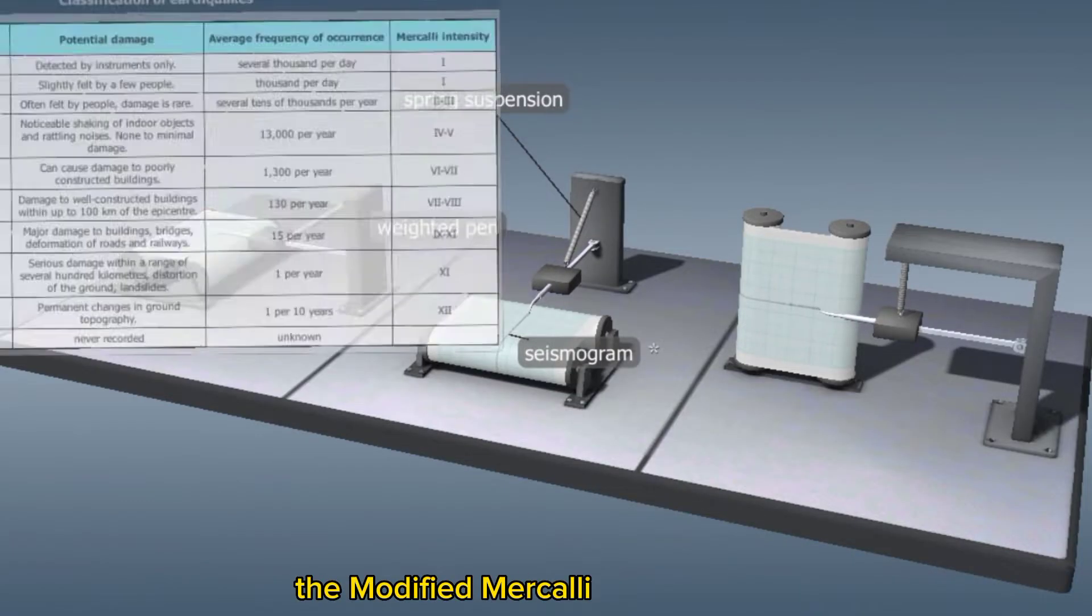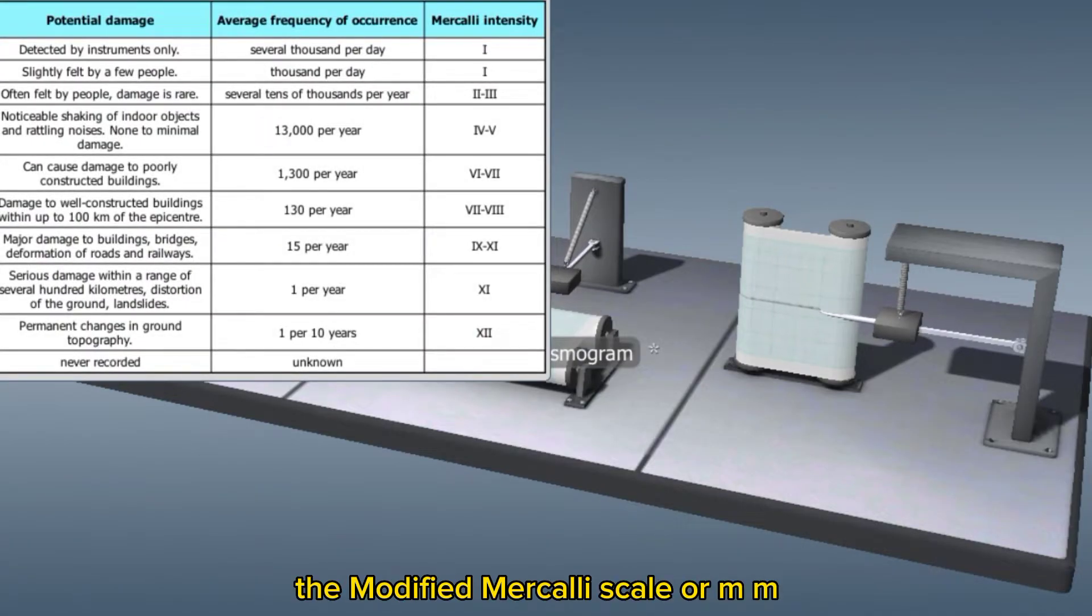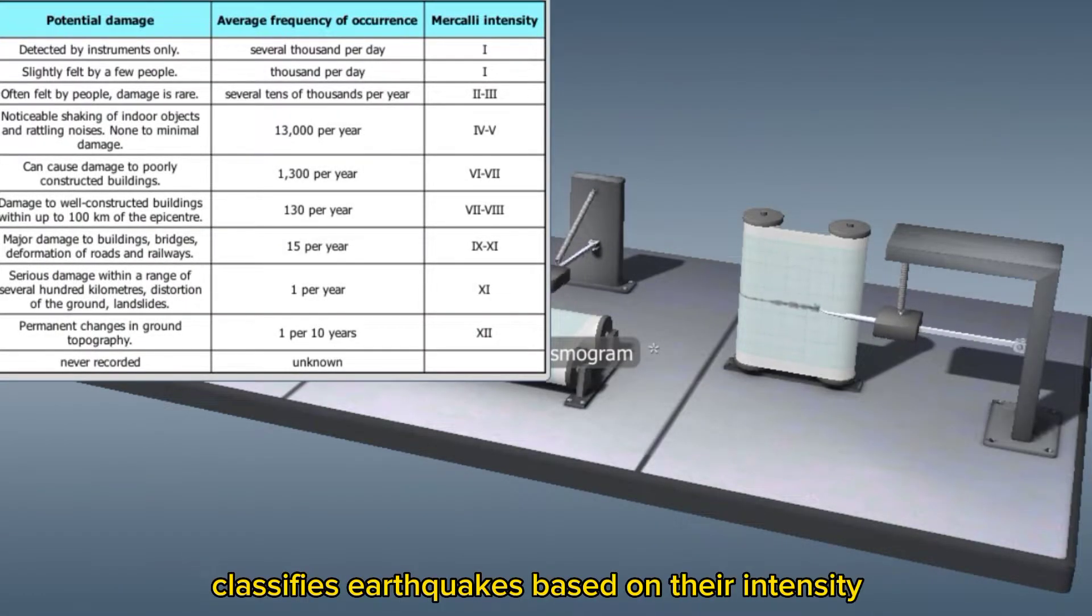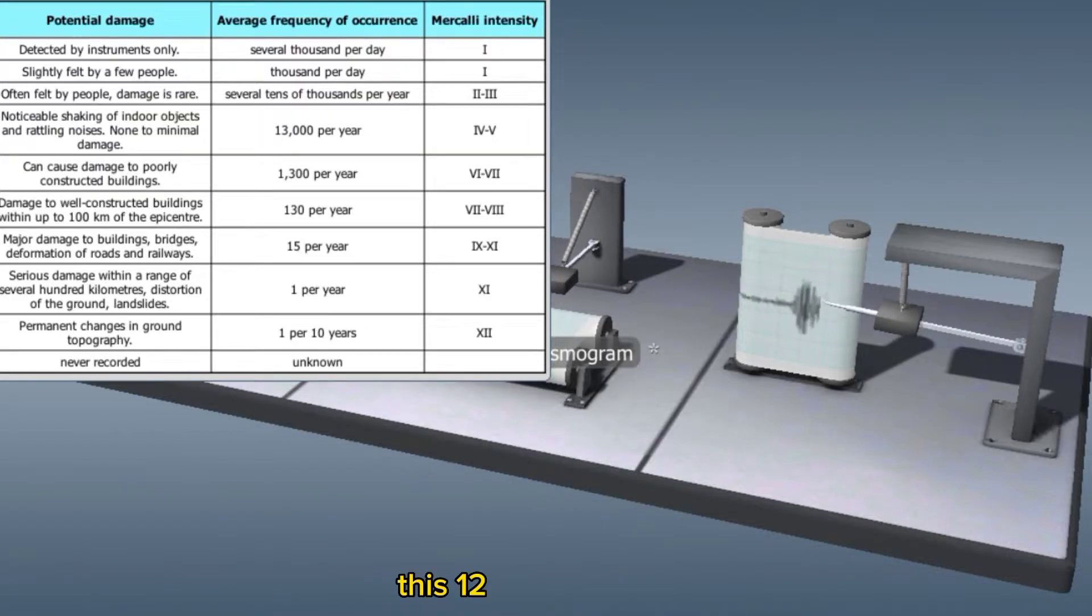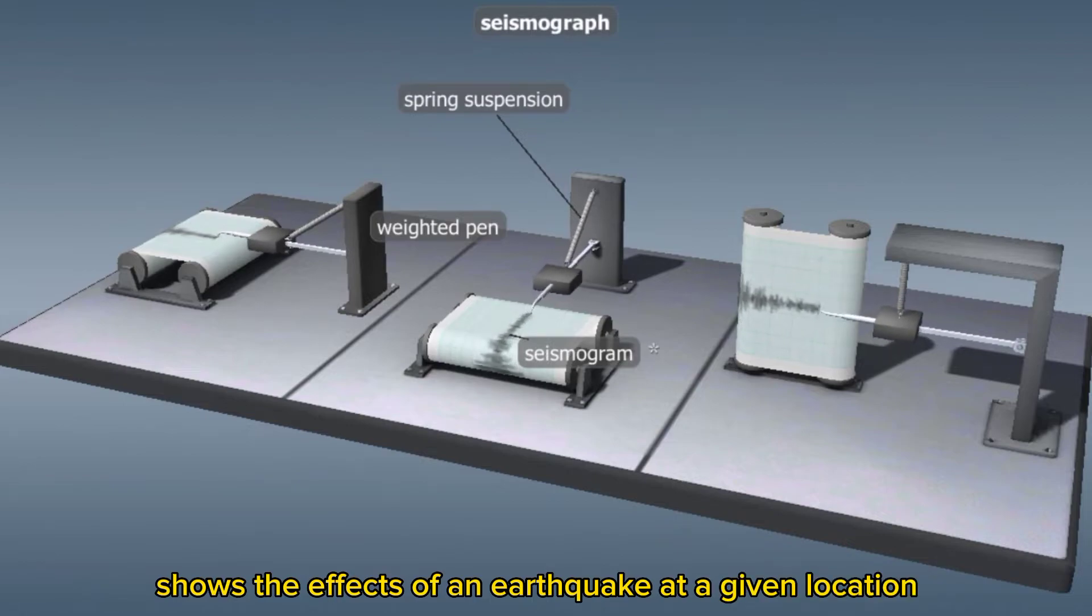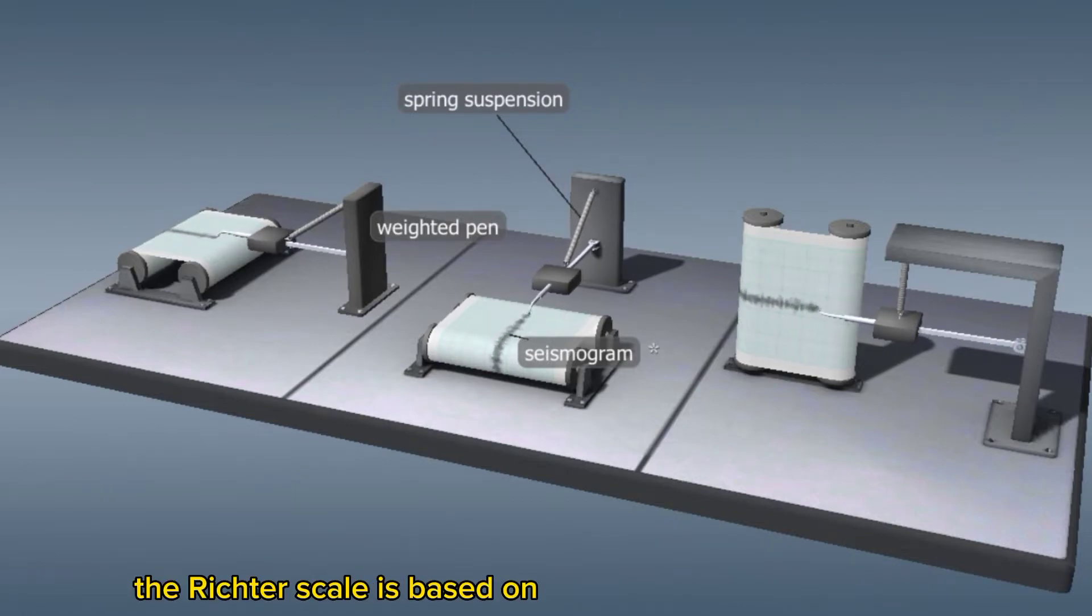The modified Mercalli scale, or MM, classifies earthquakes based on their intensity. This 12-degree scale shows the effects of an earthquake at a given location. The Richter scale is based on instrumental measurements.